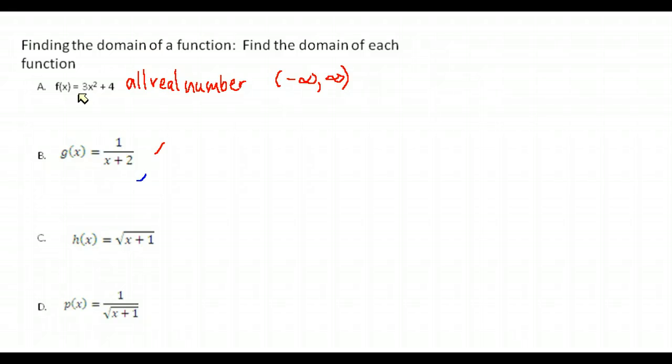So when we consider our domain, we know that whatever is in the denominator can't equal zero. So whatever makes x plus 2 equal zero is going to be excluded from our domain. So we just take our denominator, and we set it equal to zero, and solve it. And we find that if x is negative 2, that would make our denominator zero. So our domain is going to be all real numbers except for negative 2.